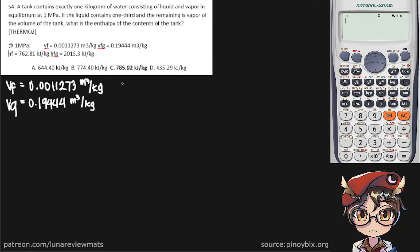Next we have our enthalpies. Hf is 762.81 kJ per kilogram and Hfg is 2015.3 kJ per kilogram.